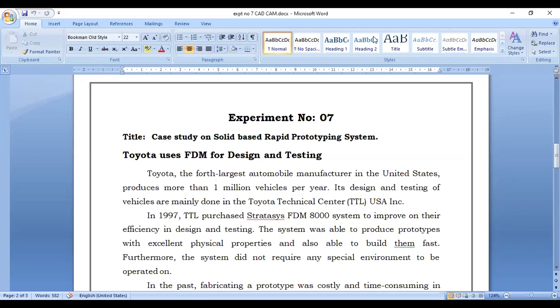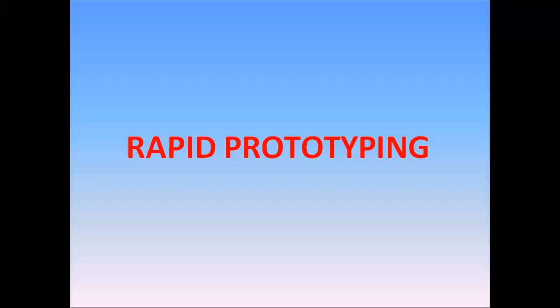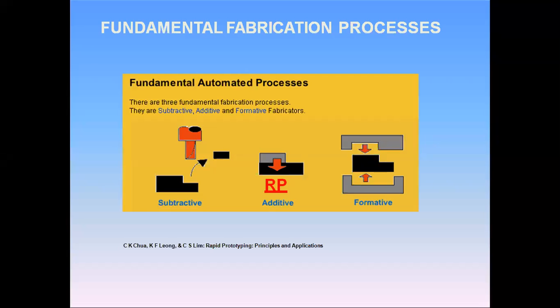Rapid prototyping is an additive manufacturing process. Unlike conventional processes where we subtract material from raw material, in rapid prototyping we add the material layer by layer. So it is also called an additive manufacturing process.